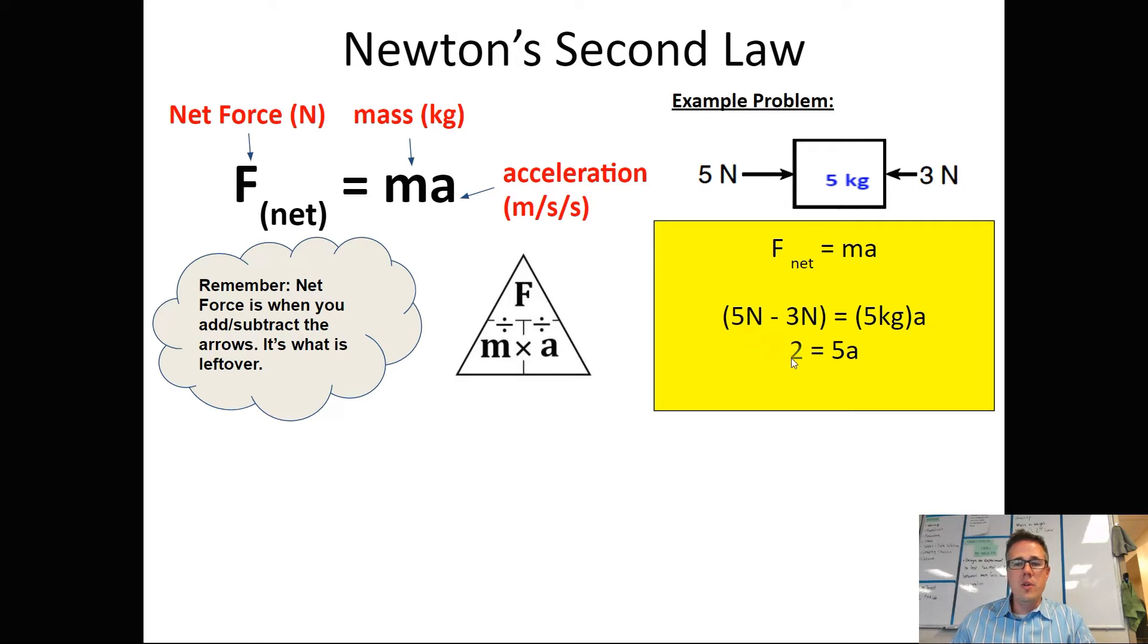Now we have to divide both sides by five. When we do that, we're going to get 0.4 meters per second per second. And remember, acceleration has a direction. Since the net force was to the right, the acceleration is going to be to the right.